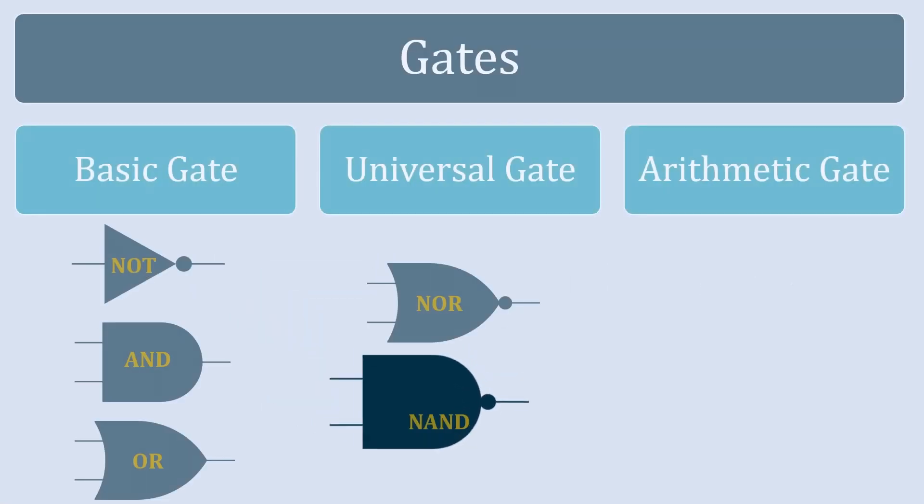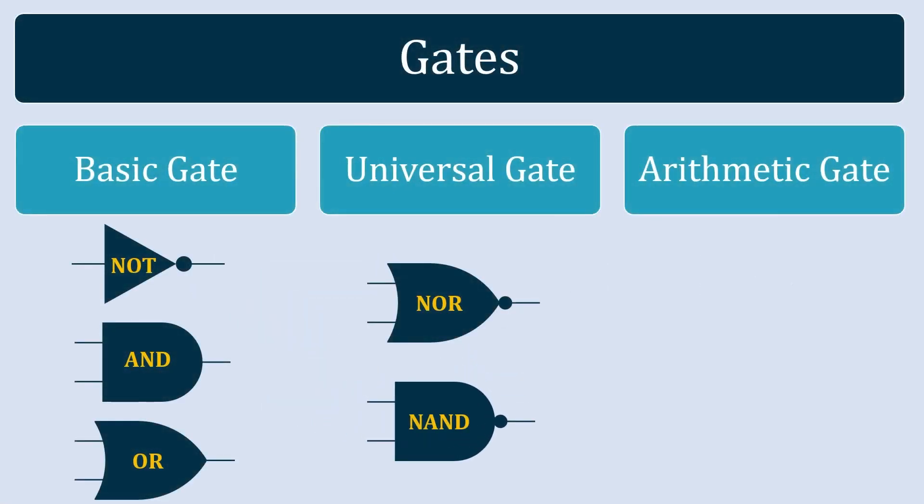The next gate is from the arithmetic gates. NOR gate and NAND gate are the two types of universal gate. The arithmetic gates are also known as derived logic gates, because they are derived from combinations of universal gates or basic gates.